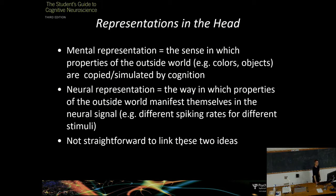We can also talk about neural representations — how is it that we represent our grandmother within our brain? What is the neural code for these kinds of properties? It's not straightforward how we link these. One is a more cognitive level description, and the other is, out of necessity, in the wet stuff of the brain.